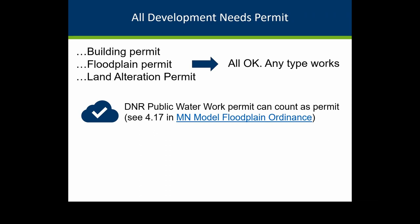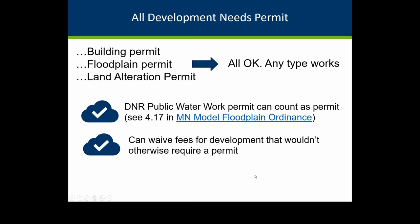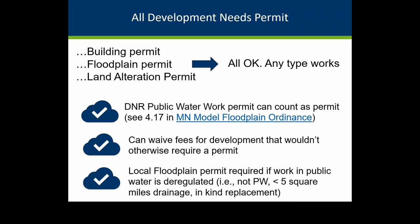If there's a DNR public waters work permit for the same project — basically it's in the river and only a negligible amount is above the ordinary high — that DNR permit can serve as the local permit, assuming the project is fully covered. If it's a minimal-impact project, communities can have low-cost or no-cost permits, but some kind of review and permit is still needed. Remember there are situations where DNR permit isn't required — such as areas not within a five-square-mile drainage area.